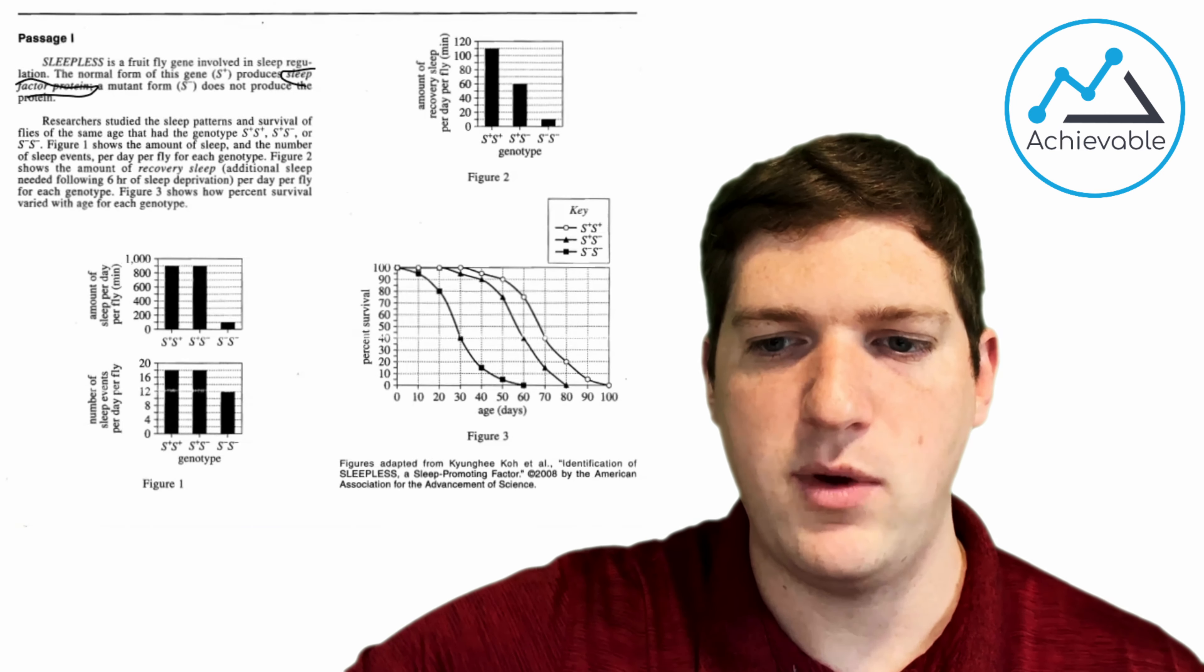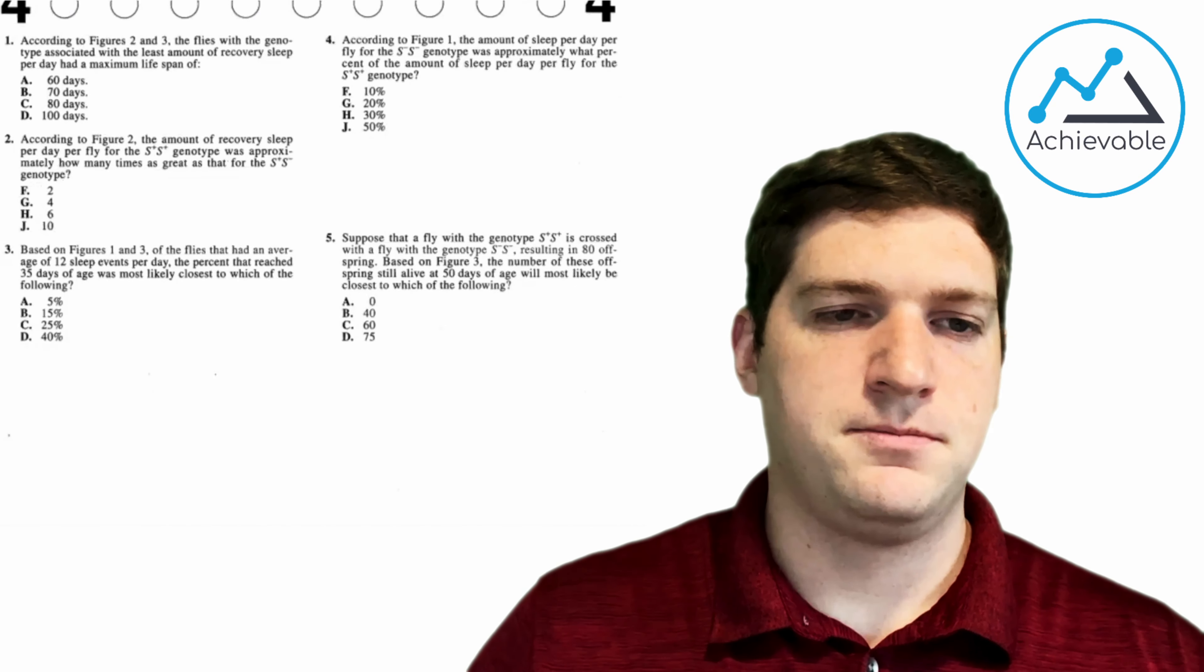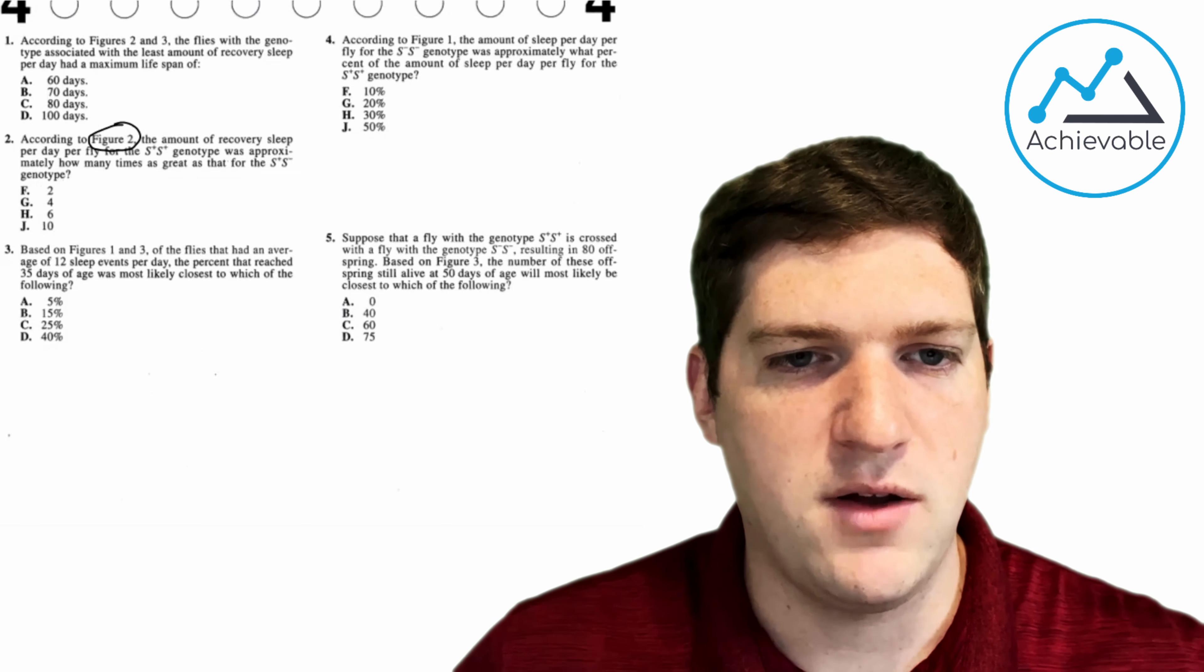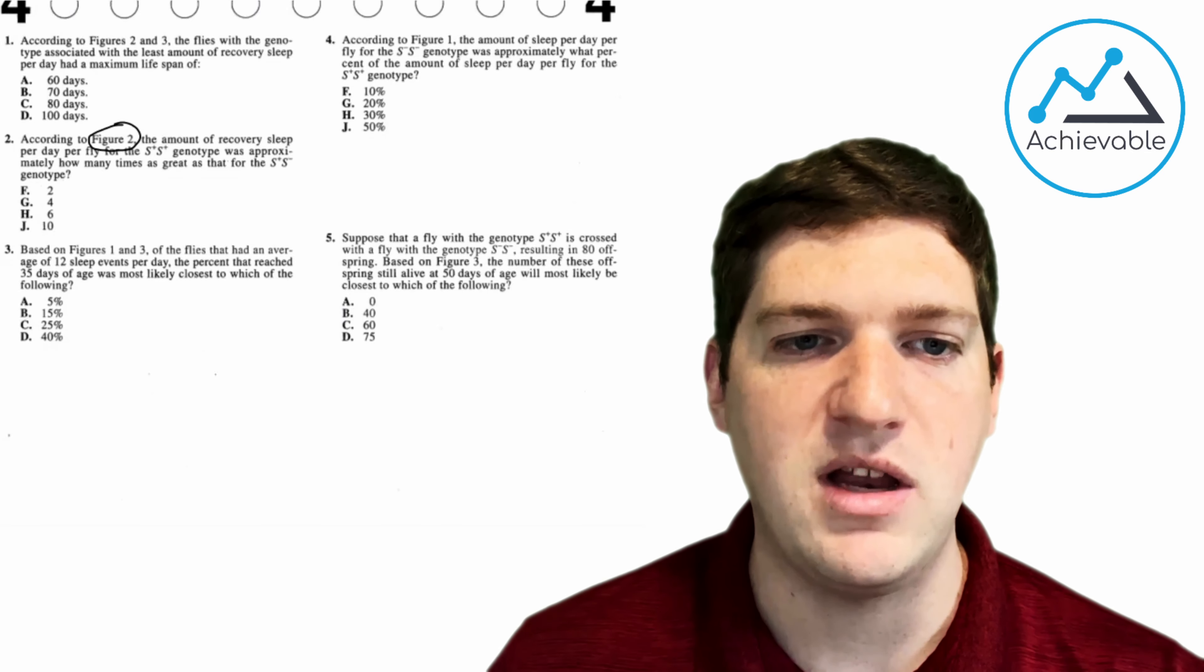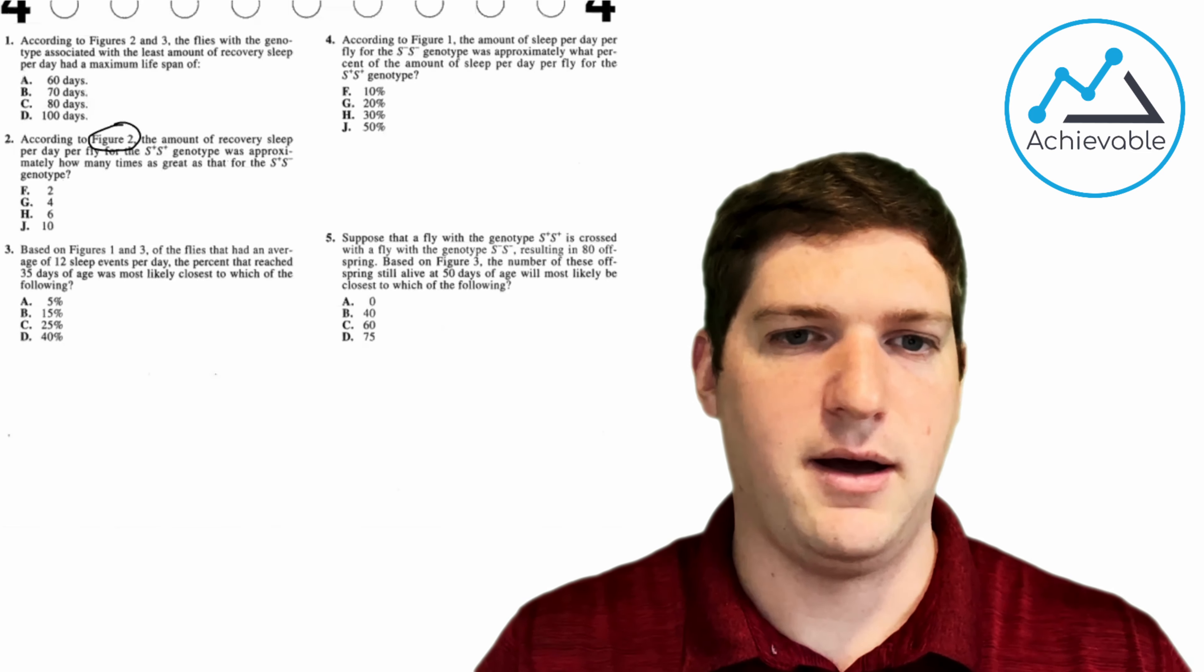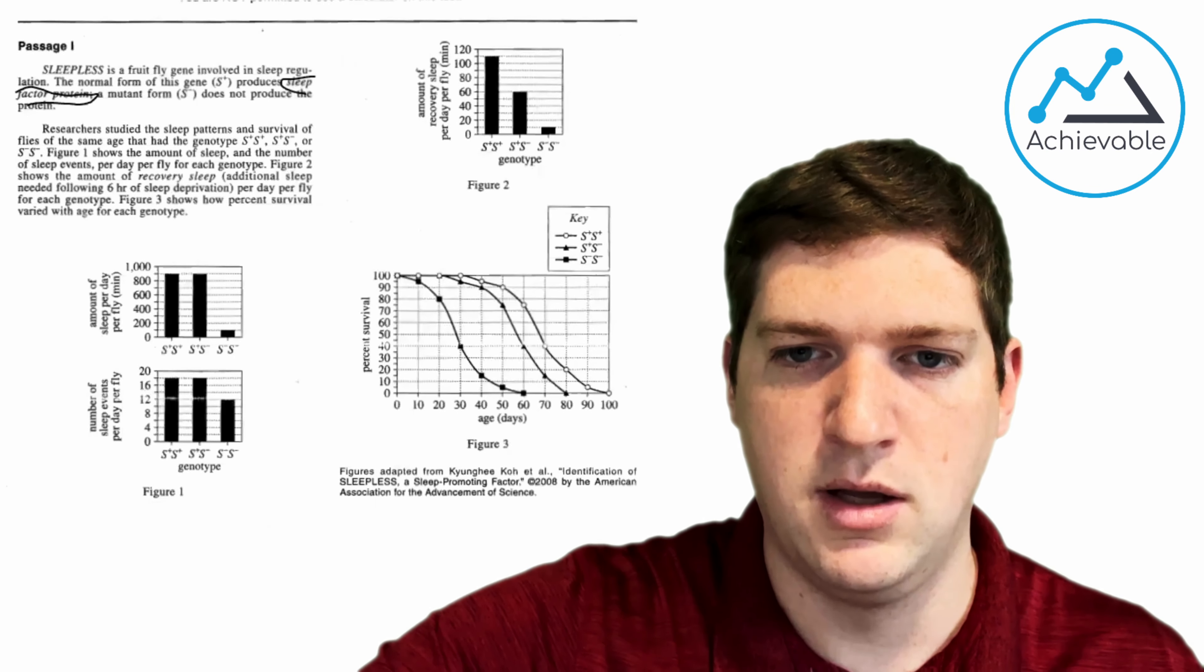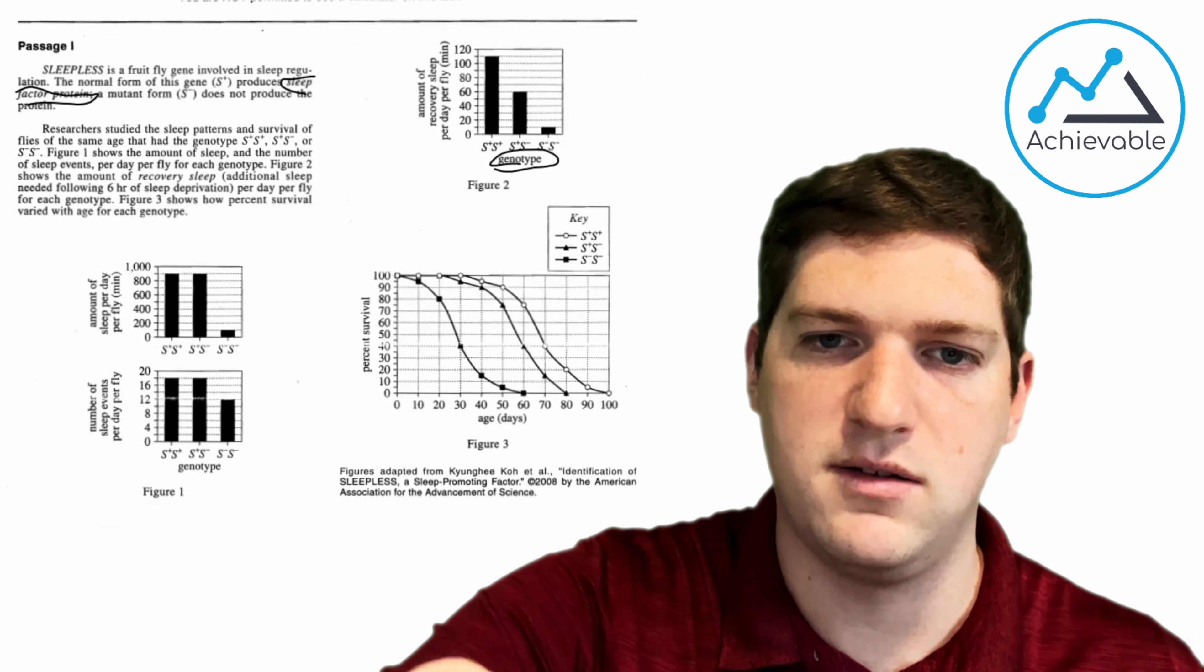So let me show you an example of how we can answer one of these questions without reading almost anything. Let's start with question two. According to figure two, figure two is what we like to call location clue. It tells you where your eye is supposed to look. Figure two, the amount of recovery sleep per day per fly for the S plus S plus genotype was approximately how many times as great as that for the S plus S minus genotype? Lots of genotypes and technical jargon. We don't have to know any of that. We don't have to understand it because if I go to figure two, I can really pull some good information. Look at this x-axis. It says genotype. I don't need to know what a genotype is. I just know that that's what it is. That's where I can find it.